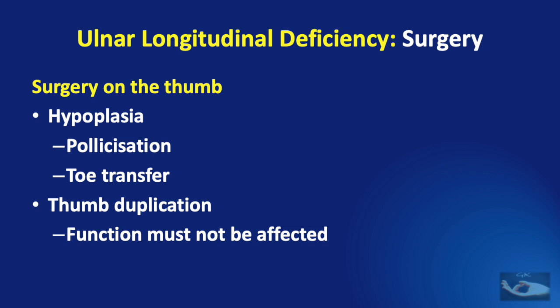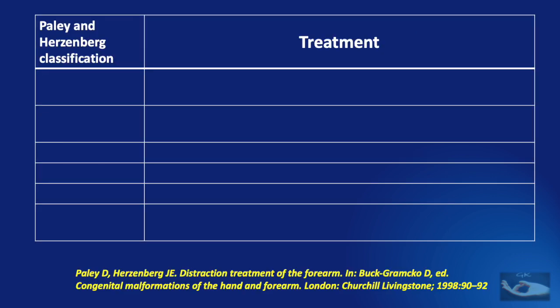If there is thumb duplication, surgery can be done, but we must remember that the results of the surgery must not affect the overall function of the hand.